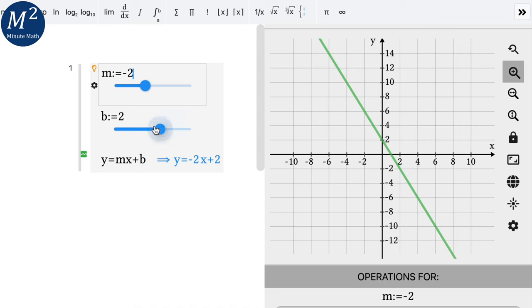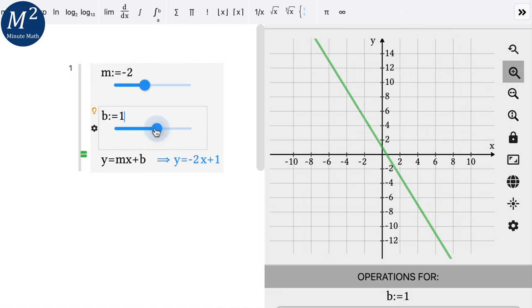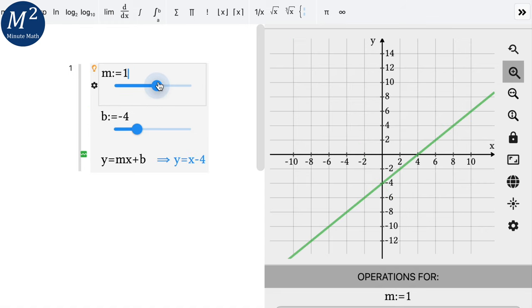Again, if our b value becomes negative, we go bring this down, negative 4, let's say. Let's say our slope now is a positive 3. What happens here?